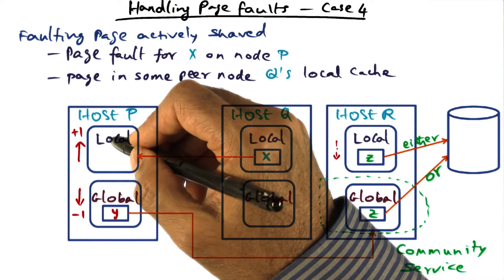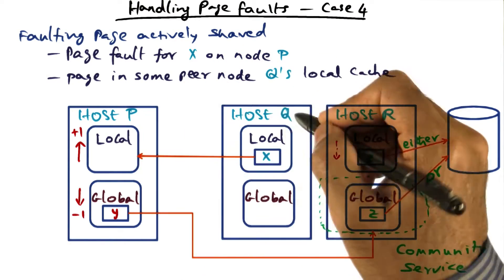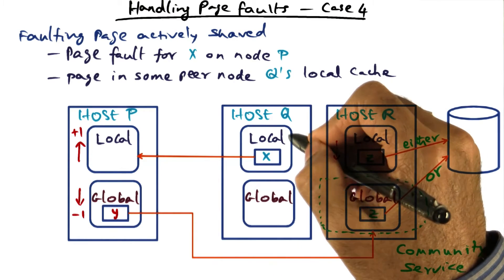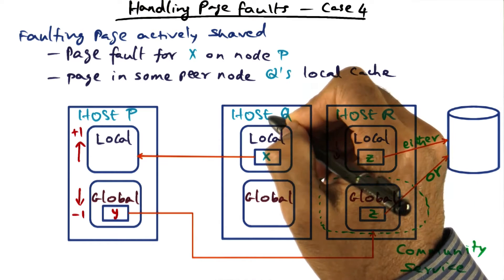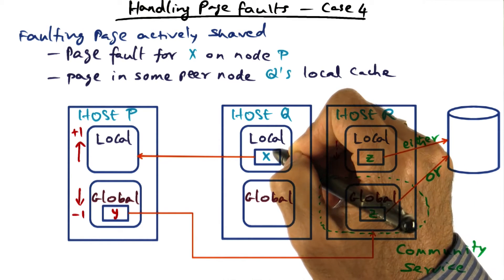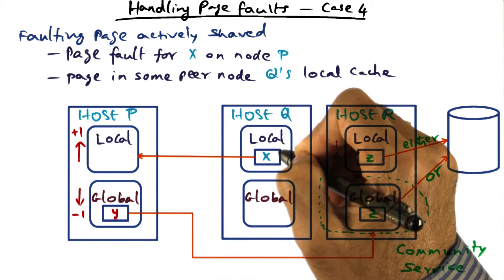So when it page faults, GMS says, oh, let me find out where it is. Well, it finds that X is in the local part of host Q. And because it is in the current working set of host Q, we want to leave it there. We don't want to yank it away from there.